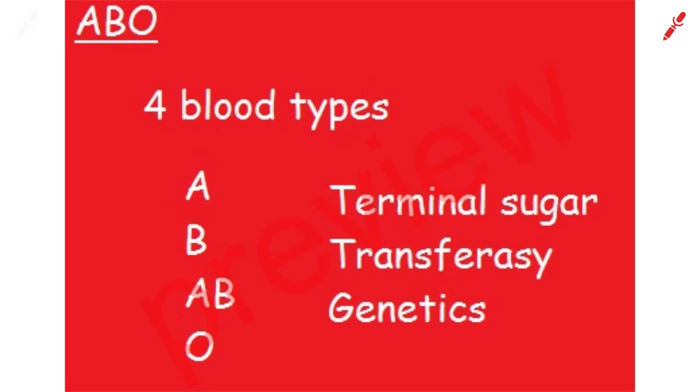The ABO blood group system consists of 4 blood types: A, B, AB and O. They differ in their terminal sugar on the red blood cells, which is added by a transferase. Which transferase you have lies in genetics.